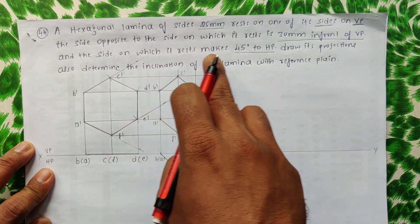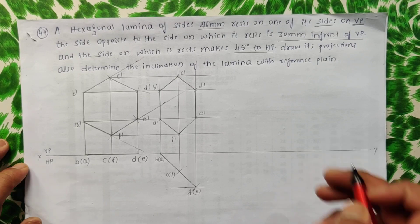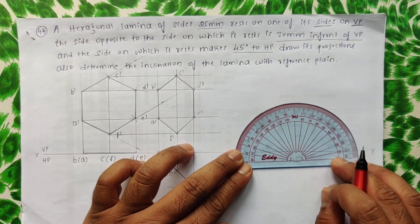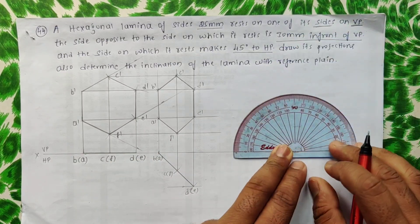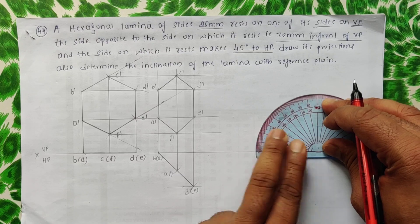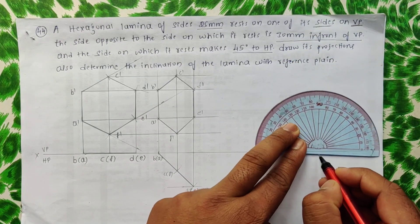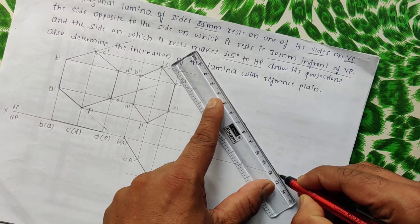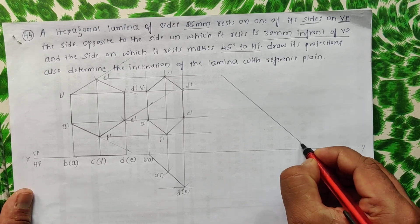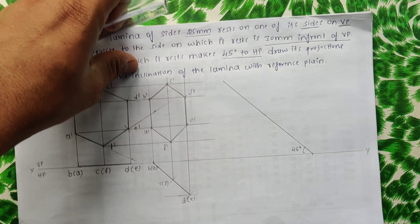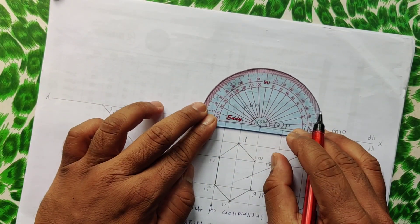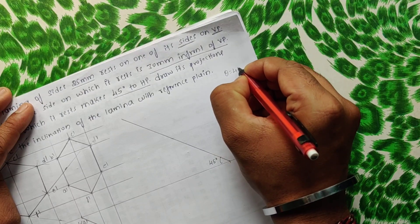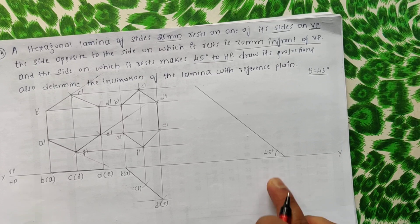The next step is to apply the inclination — the side makes 45 degrees to HP. Inclination with respect to HP can be seen in VP, so consider a 45-degree line. Keeping the protractor here, consider a 45-degree line this way. There may be page constraints the other way, so I will take 45 degrees this way. The thin line should be at 45 degrees. So theta is 45 degrees.